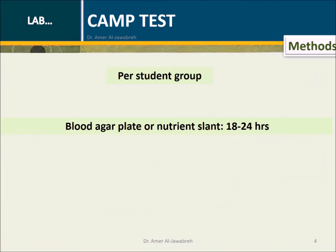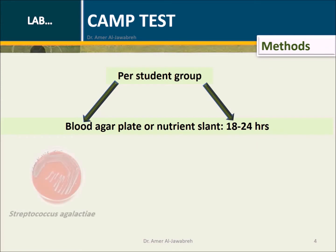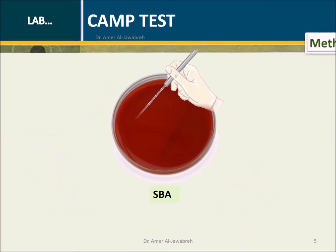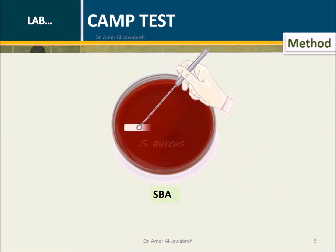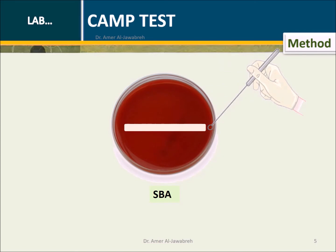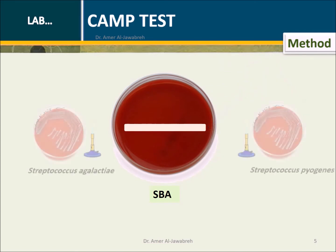Method: Provide each student group with two culture plates — Streptococcus agalactiae and Streptococcus pyogenes. Streak the beta-lysin producer Staphylococcus aureus across the center of the SBA plate.